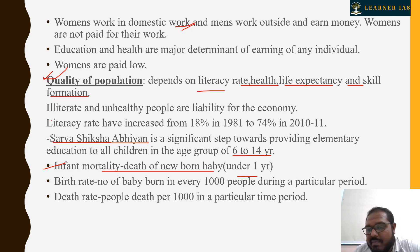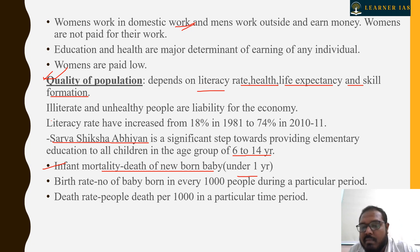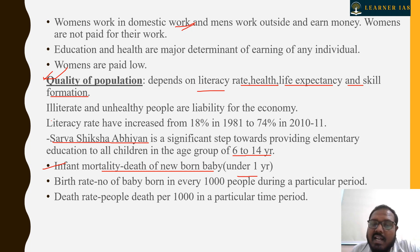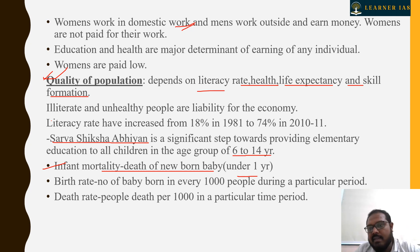वहाँ पे infant mortality rate कम होता है, but due to illiteracy infant mortality rate increases. Infant मतलब below one year baby। Birth rate किसको कहा जाता है — 1000 population में एक समय के दौरान कितने बच्चे जन्म हुए उसको birth rate कहा जाता है। Death rate — 1000 population में एक particular time period में कितने लोगों का death हुआ, उसको death rate कहा जाएगा।